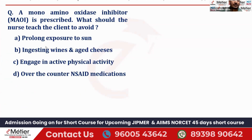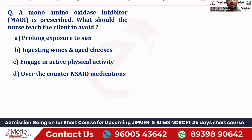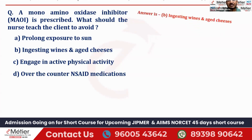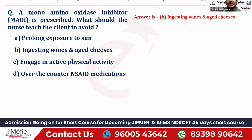Four options are mentioned: prolonged exposure to sun, ingestion of wines and aged cheese, engage in active physical activity, and over-the-counter medications like NSAIDs. Among these, the right answer is option B — ingestion of wine and aged cheese — because these are examples of tyramine-rich foods.